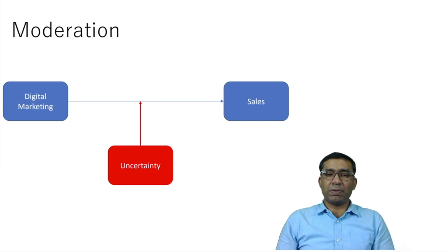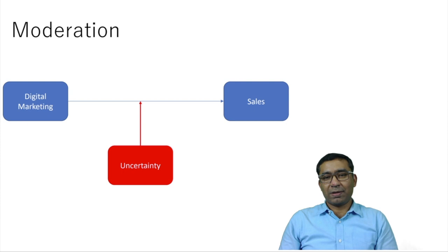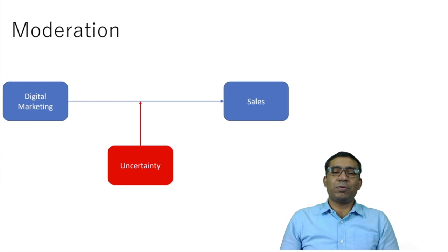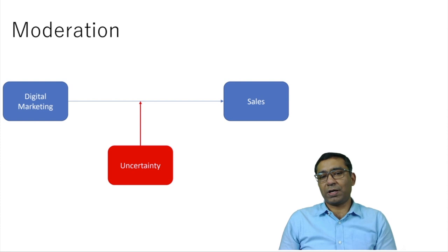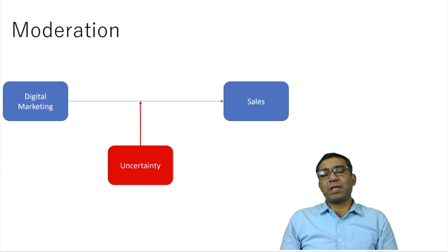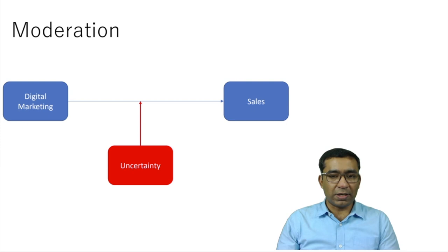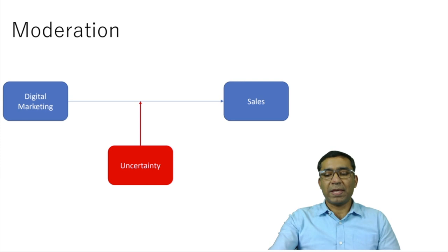Another example: when I have a class at 2 p.m., mostly everybody is present. But if my class is at 8 a.m. in the morning, mostly people would not be able to attend. So class timing is a moderator — it can play a very important role. Similarly, raining outside also influences attendance. These variables act like a catalyst in your research, strengthening the relationship. So: moderation strengthens the relationship, while mediation explains the relationship between dependent and independent variables.